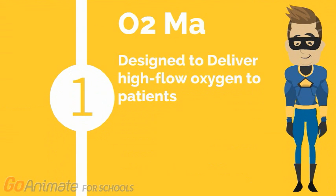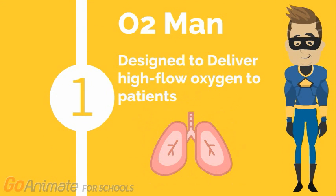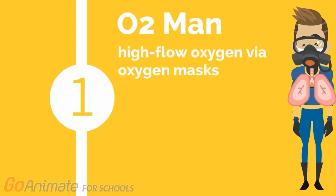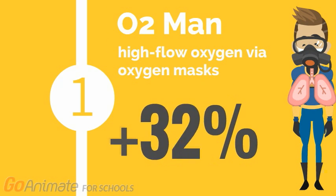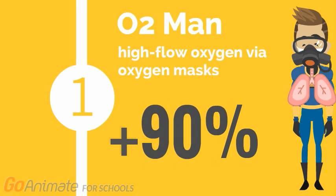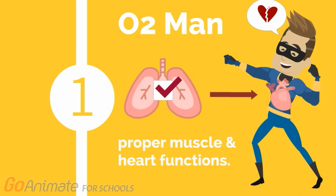Meet Sepsis 1, aka the O2 man. Sepsis 1 delivers high flow oxygen to patients. Patients with sepsis require high flow oxygen via oxygen mask until oxygen saturation level within the blood is more than 94%. Good blood oxygenation is necessary for proper muscle function, including your heart function.